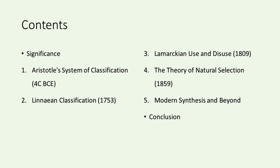Let's take a moment to outline the path we'll follow today. We'll begin with Aristotle, whose system of classification laid some of the earliest foundations for organizing the natural world. Moving forward in time, we'll encounter Linnaeus, whose 1753 classification system revolutionized taxonomy by providing a standardized way to categorize species. Next, we'll explore Lamarck's 1809 theory, which proposed that organisms could pass on acquired characteristics to their offspring. His theory of use and disuse, combined with the inheritance of acquired characteristics, represented an early attempt to explain evolutionary change before the mechanisms of genetics were fully understood.